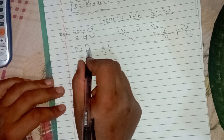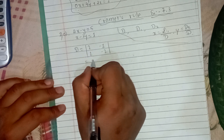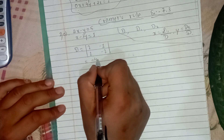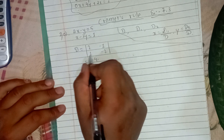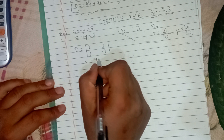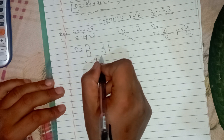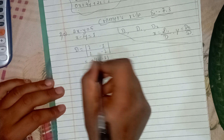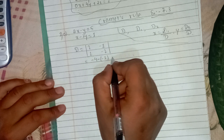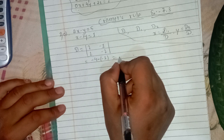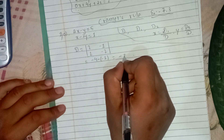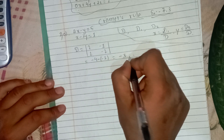The determinant D is 2 into minus 2, which gives minus 4, minus 1 into 1 which is minus 1. So D equals minus 4 plus 1, which equals minus 3.